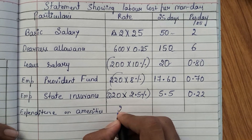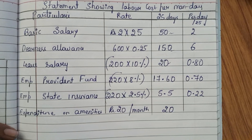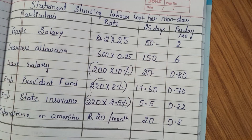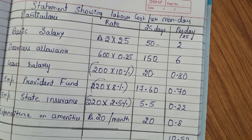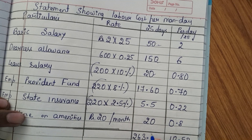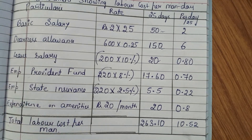The last component is expenditure on amenities. It is rupees 20 per month, so for 25 days it is rupees 20. Dividing by 25 gives 0.8 per day. Adding all per day values: 2 plus 6 plus 0.80 plus 0.70 plus 0.22 plus 0.8 equals 10.52. Adding the 25-day column: 50 plus 150 plus 20 plus 17.60 plus 5.5 plus 20 gives 263.10. This is the total labor cost per man.